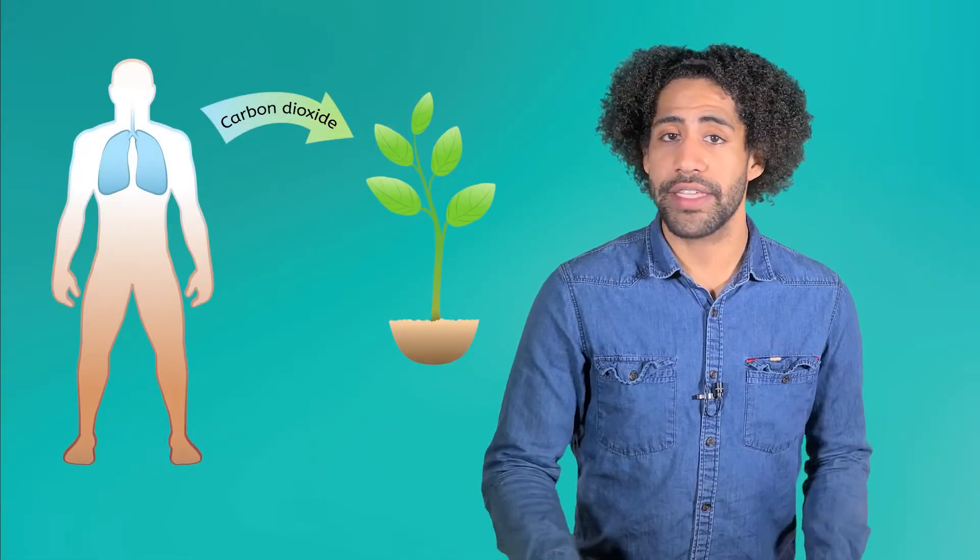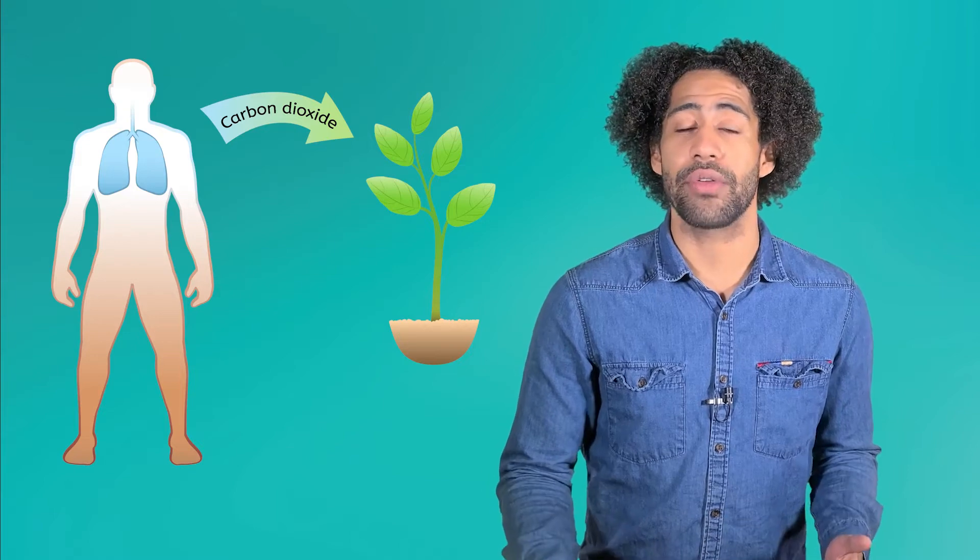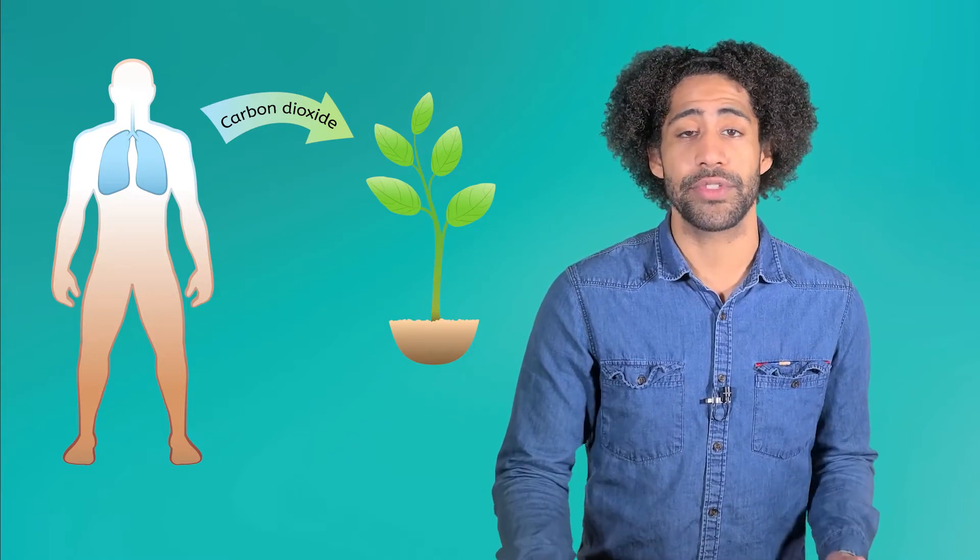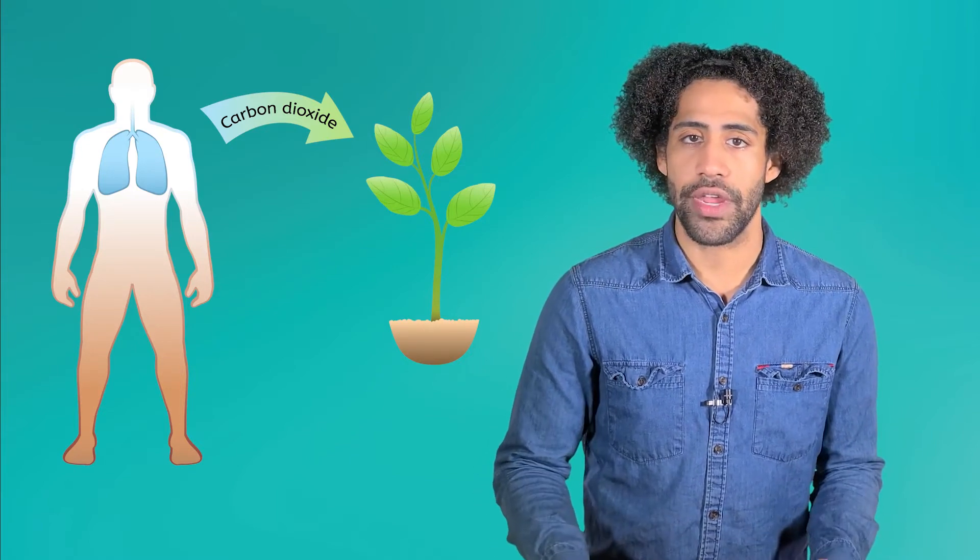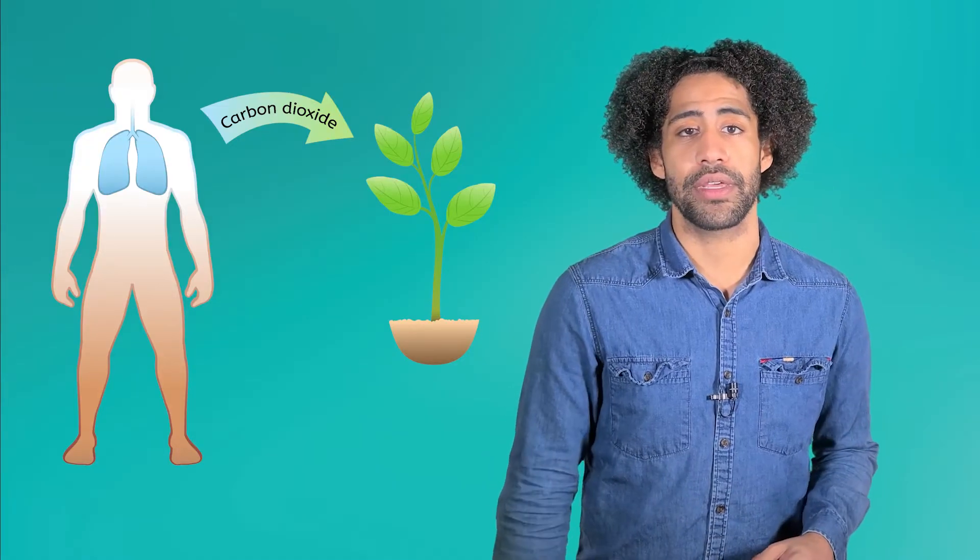But some pollutants are a little different. For example, carbon dioxide is the gas that all animals breathe out and that plants take in for photosynthesis. It's naturally occurring and is important to the environment. But human activities like burning fuel create way more carbon dioxide than the air would have naturally. Even though carbon dioxide is naturally occurring, it can still pollute the environment when there's too much of it.